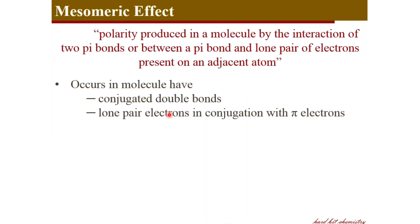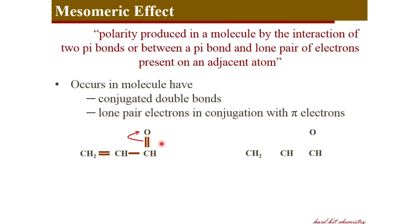Mesomeric effect can occur in molecules with either conjugated double bonds or a lone pair in conjugation with pi electrons. Here is a case where double bonds are in conjugation — that is, double bonds separated by a single bond. Due to the electronegativity of oxygen, the pi electron cloud is located on oxygen, so oxygen becomes negatively charged and this double bond becomes a single bond. Consequently, this pi electron cloud moves to the next carbon so that a new bond is placed there, and this carbon becomes positive. A polarity is induced in this molecule due to the mesomeric effect induced by this oxygen atom.